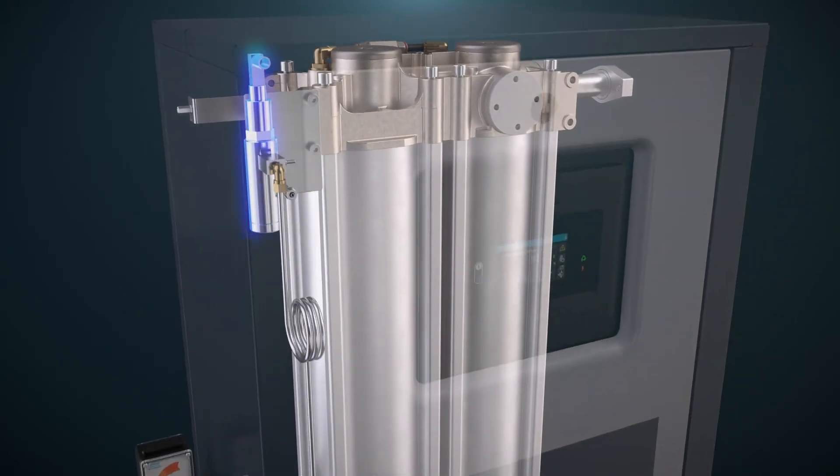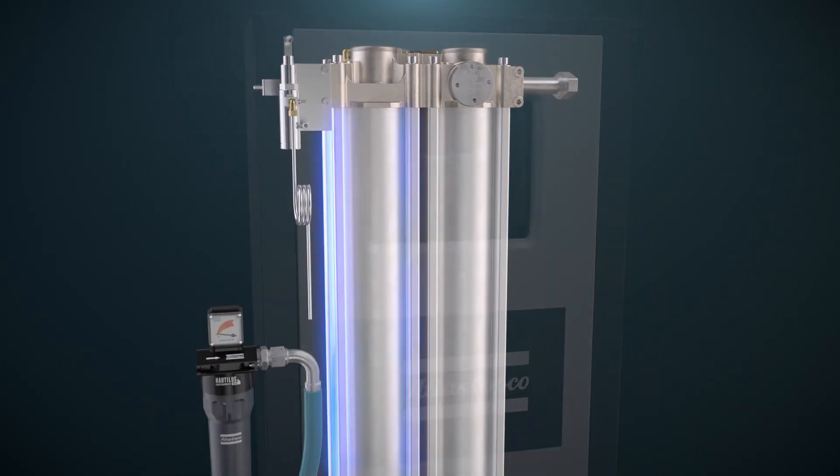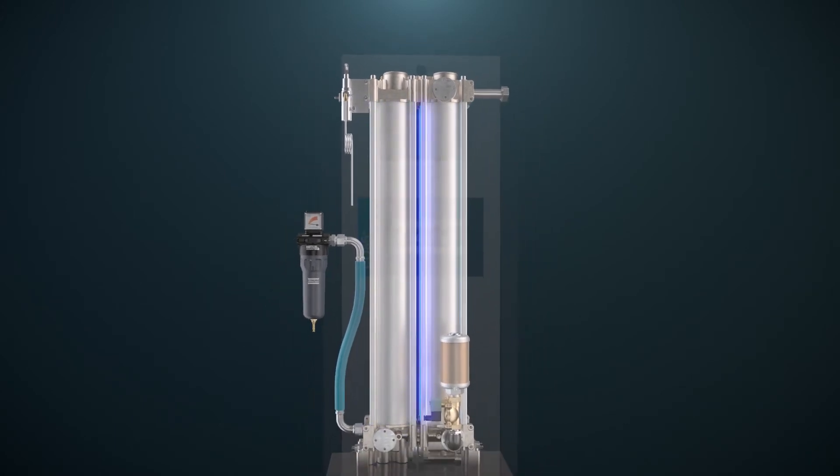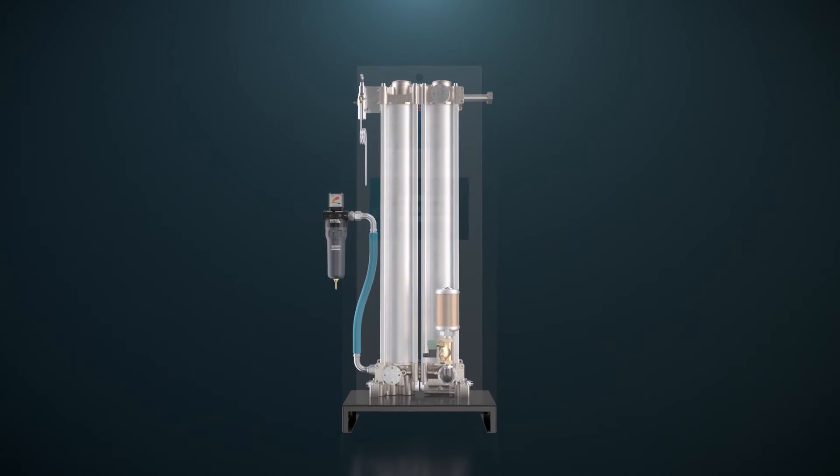In addition, optional dew point-dependent switching ensures the dryer only switches towers when the desiccant is saturated. This means cycle times are longer and your energy use is reduced even more.